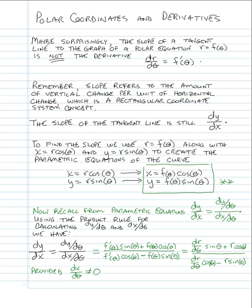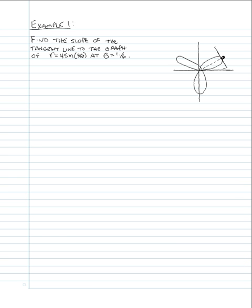The first example is finding the slope of a tangent line to a rose curve. Our problem is to find the slope of the tangent line to the graph of r = 4·sin(3θ) at θ = π/6. We recognize this is a rose curve; θ = π/6 is at the end of a petal, and we want to know the slope of the tangent line there.